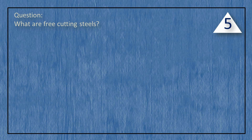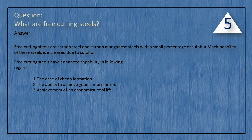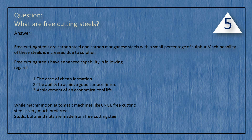What are free cutting steels? Free cutting steels are carbon steels and carbon manganese steels with a small percentage of sulfur. Machinability of these steels is increased due to sulfur. Free cutting steels have enhanced capability in: ease of chip formation, ability to achieve good surface finish, and achievement of an economical tool life. While machining on automatic machines like CNCs, free cutting steel is very much preferred. Studs, bolts, and nuts are made from free cutting steel.